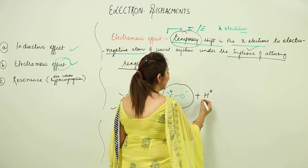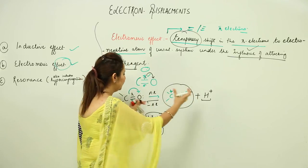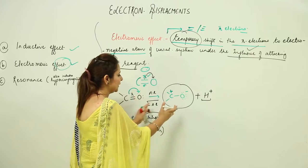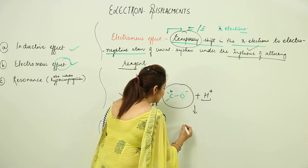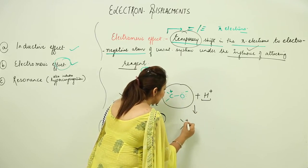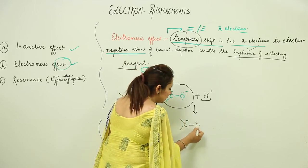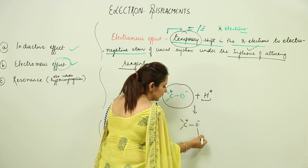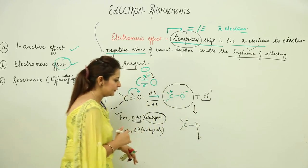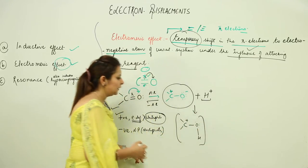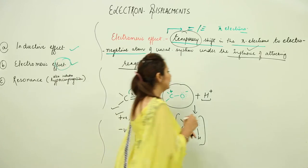Let's say I add an H⁺ ion to the unsaturated system. When this H⁺ ion approaches, an electron displacement occurs — the pi electrons shift toward the electronegative atom. As a result, one atom gains a negative charge. Since H⁺ is positively charged, it will attach to the negative center, and the positive and negative charges get neutralized. This is the kind of electron displacement that occurs when a hydrogen ion approaches an unsaturated system.